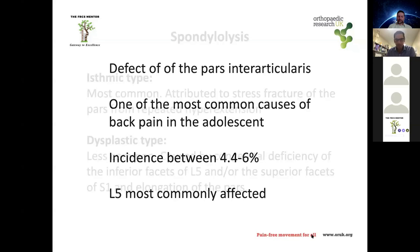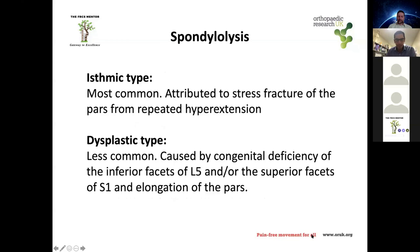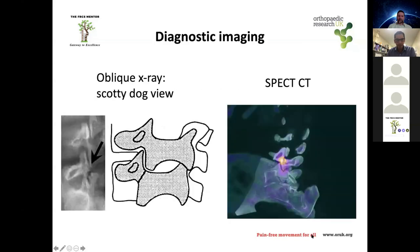There are different types of spondylolisthesis. The isthmic type is the most common and is attributed to a stress fracture of the pars from repeated hyperextension. The dysplastic type is less common and is caused by congenital deficiency of the inferior facets of L5 and the superior facets of S1, along with elongation of the pars.